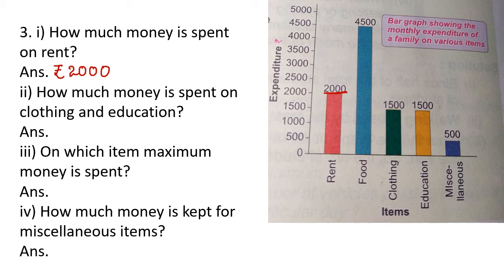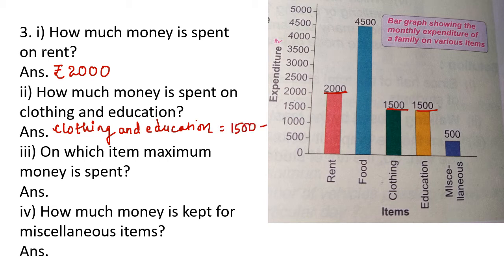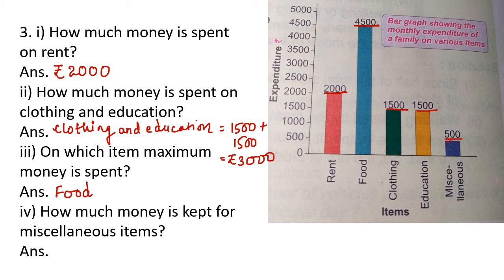How much money is spent on clothing and education? On clothing 1,500 and on education also 1,500, so clothing and education together equals 1,500 plus 1,500, that is rupees 3,000. On which item is maximum money spent? The highest bar is for food at 4,500, so the answer is food. How much money is kept for miscellaneous? For miscellaneous, 500 rupees are there, so it will be rupees 500.